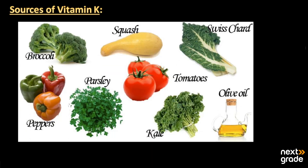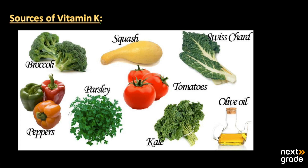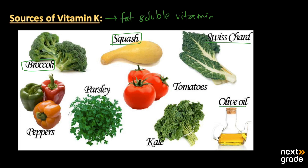Next we have the sources of Vitamin K, which is also a fat-soluble vitamin. We can get our sources from fruits as well as vegetables. The sources include broccoli, squash, Swiss chard, olive oil, tomatoes, kale, parsley, and peppers. Peppers are a common source of both Vitamin A and Vitamin K, and they come in three forms: green, red, and orange or sometimes yellow.